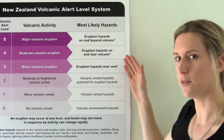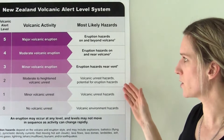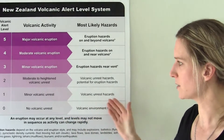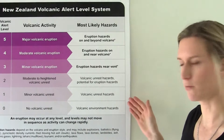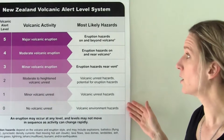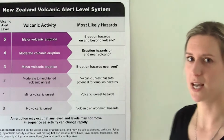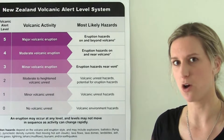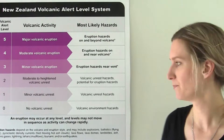On this side we have the most likely hazards associated with each of the volcanic activity levels. These range from volcanic environment hazards right through to eruption hazards that might impact the area on the volcano as well as beyond the volcano.